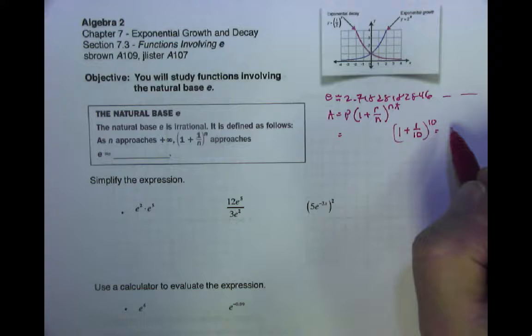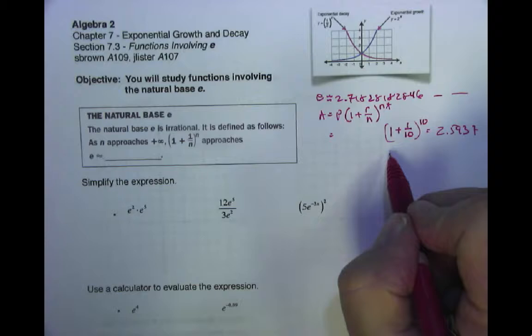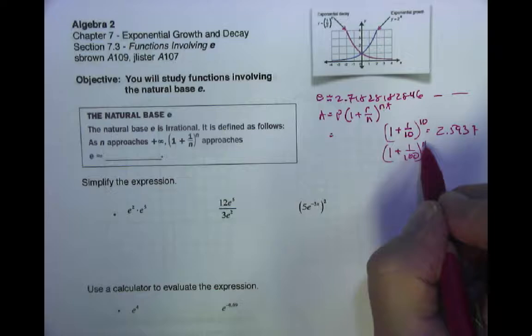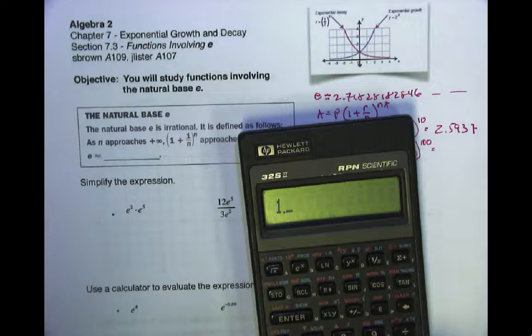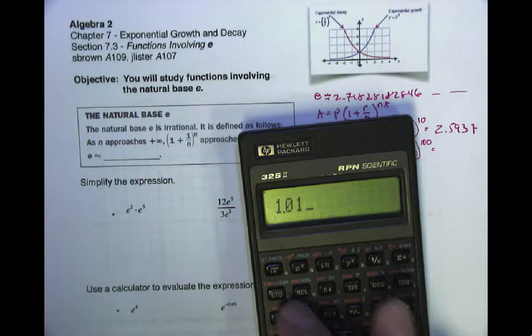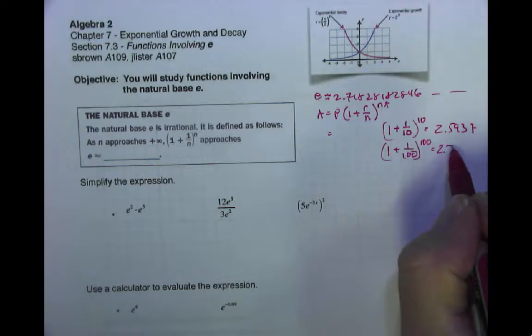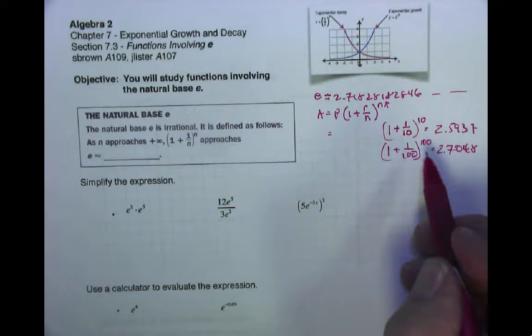What if we take this to 100? So 1 plus 1 over 100 — that's a really small rate — but you're taking it to the 100th power. So we have 1.01 to the 100th. Look — 2.7048. So it's getting better. Even though we have a much smaller rate, we're taking it to a much greater power, so it's getting really close to 2.7.